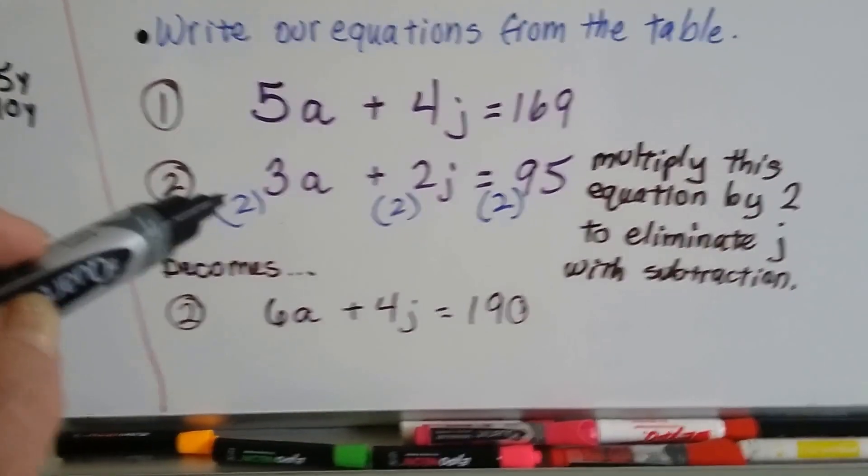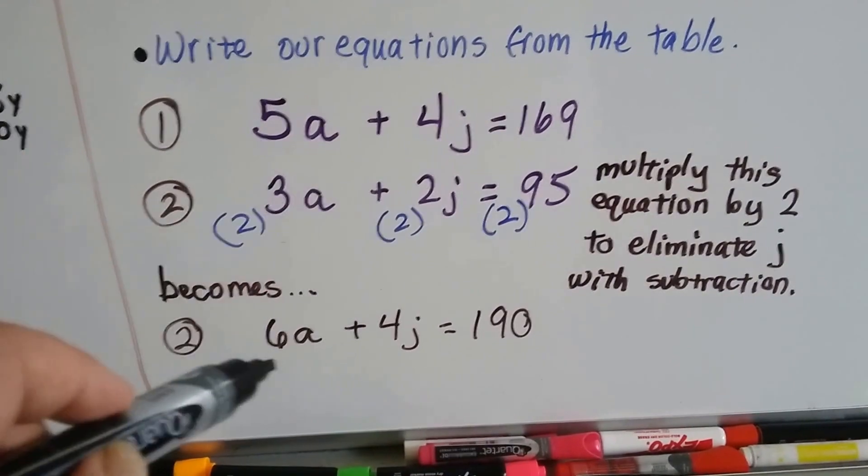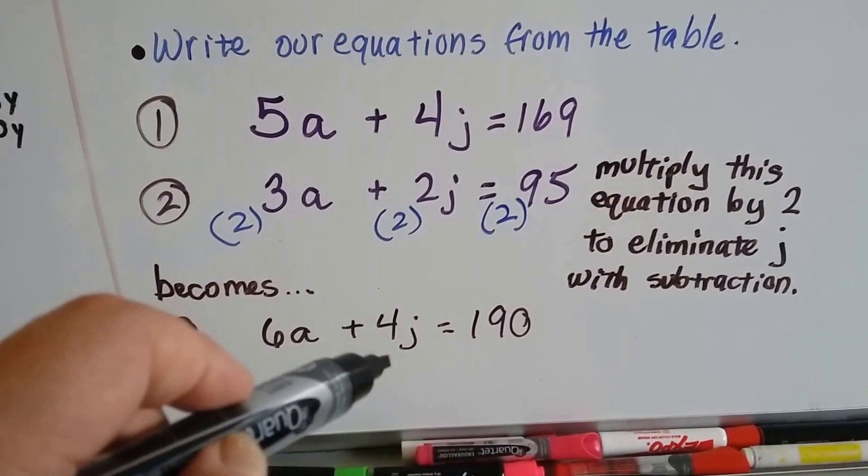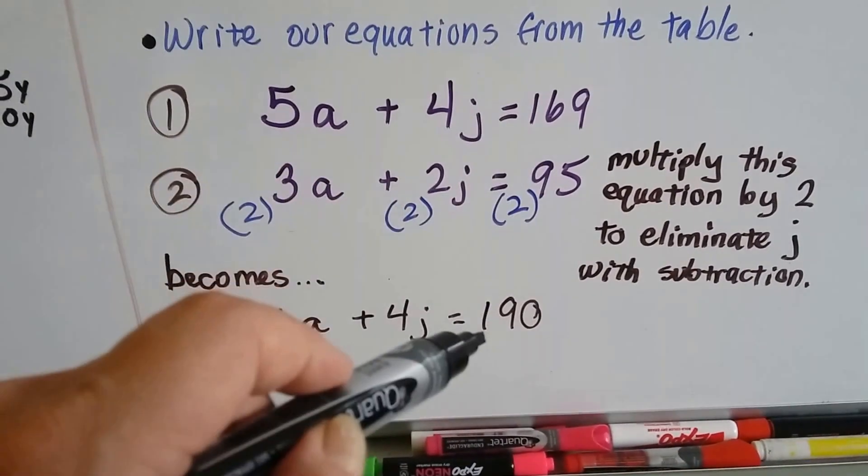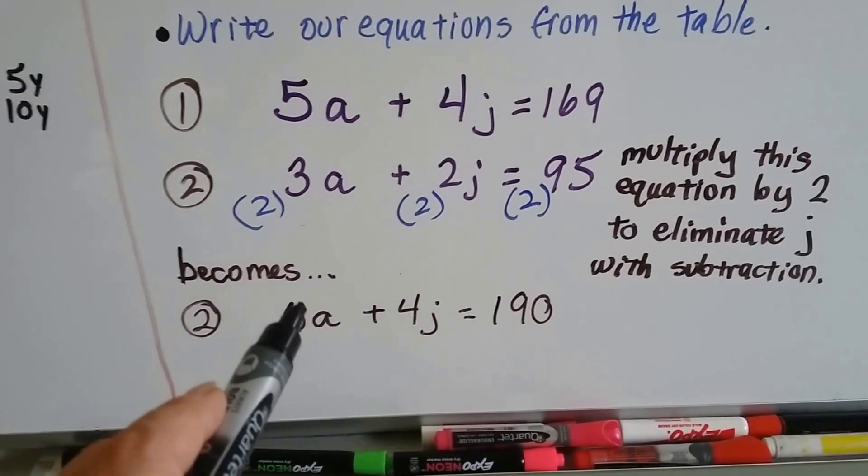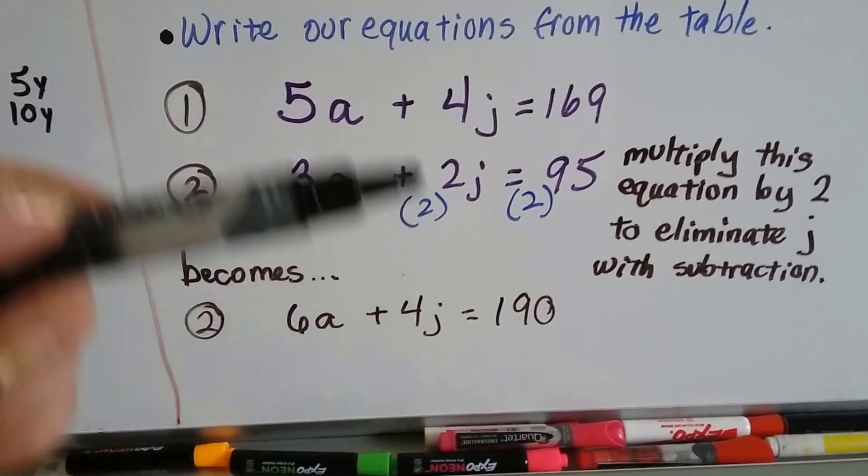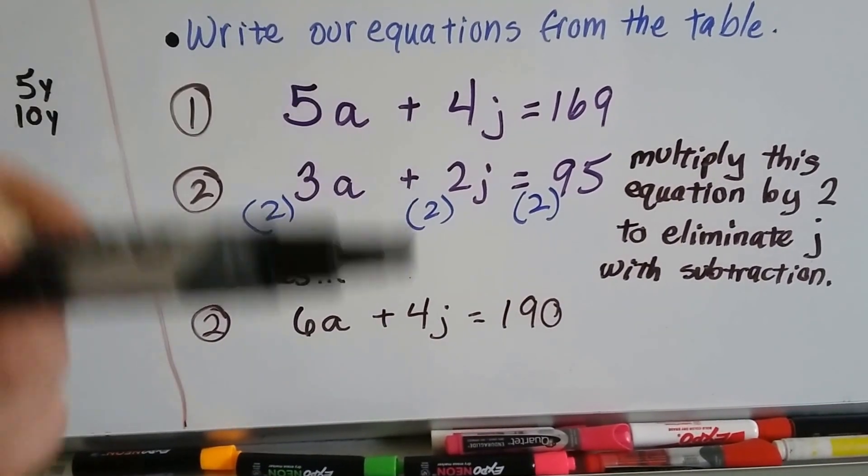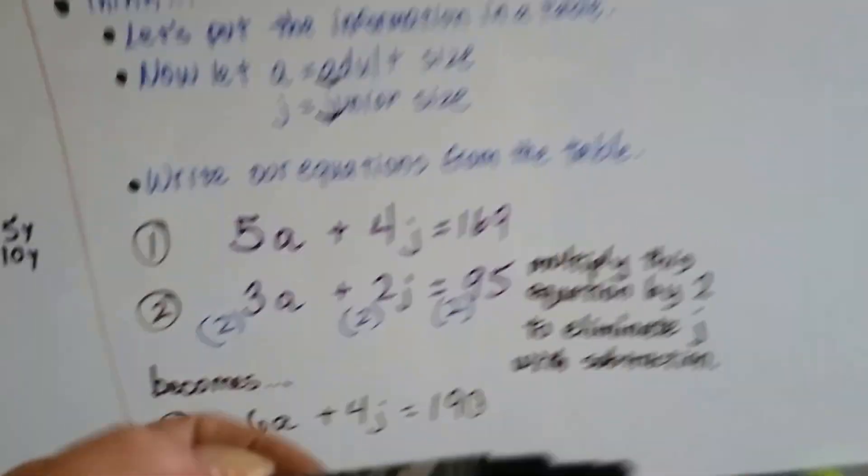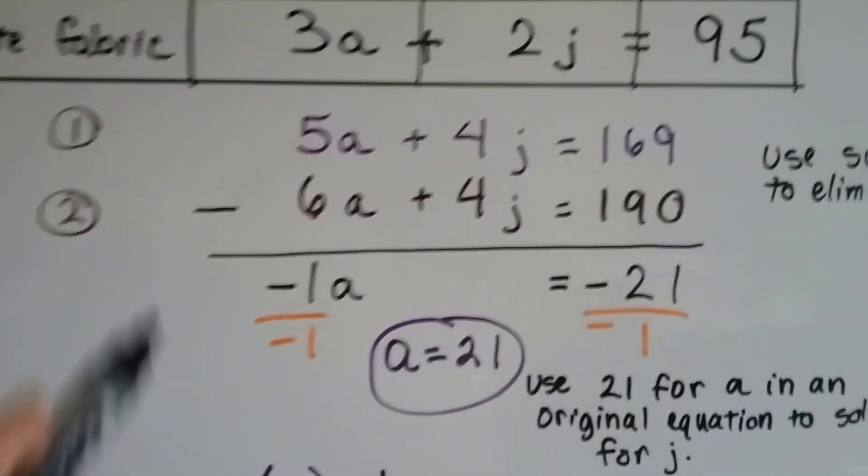So it becomes 2 times 3 is 6A and 2 times 2 is 4J and 2 times 95 is 190. Now that's our new second equation. So now we put together our first and second equation together to subtract. Okay? So we're going to subtract.